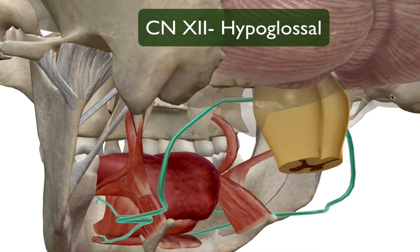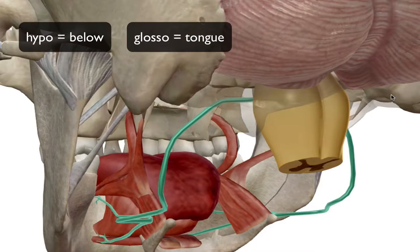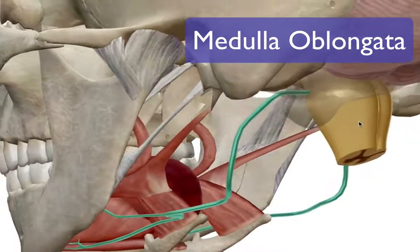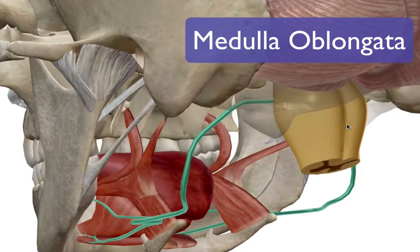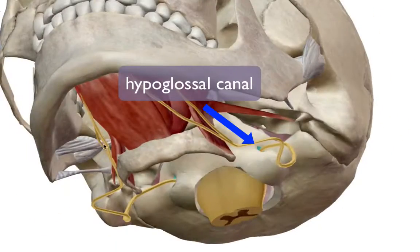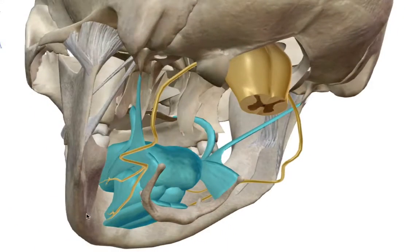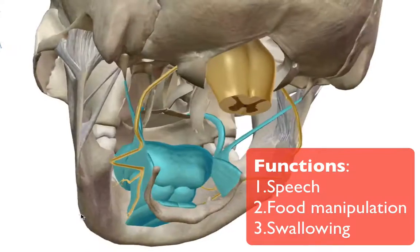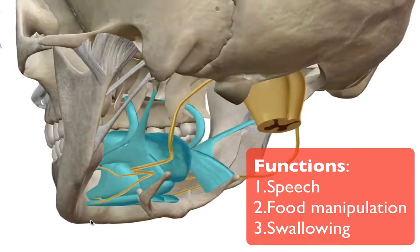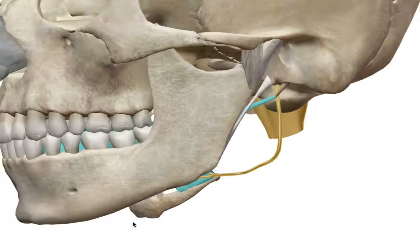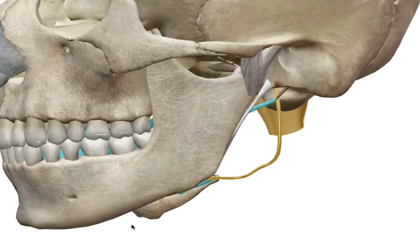Finally, cranial nerve number twelve, the hypoglossal — 'hypo' meaning below, 'glossal' meaning tongue. It originates from the medulla oblongata and exits the skull through the hypoglossal canal. It branches out to innervate tongue movements, controlling speech, food manipulation, and swallowing. To get a better look at the two branches, I'm going to remove the mandible for a closer view.